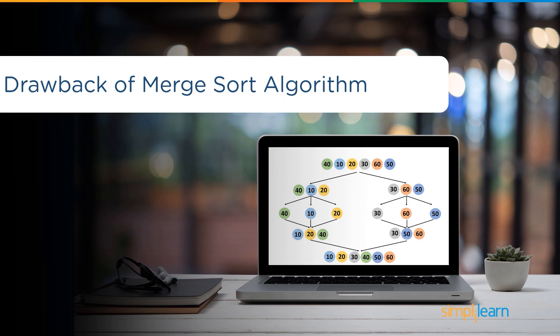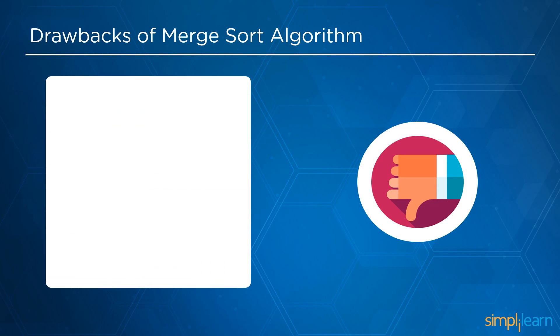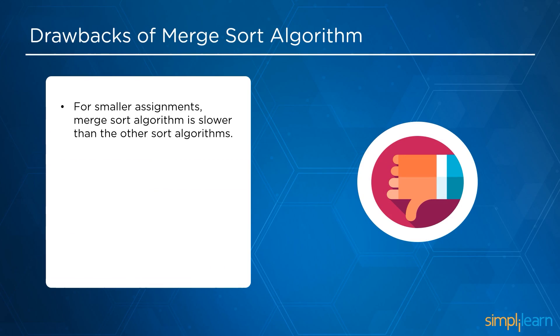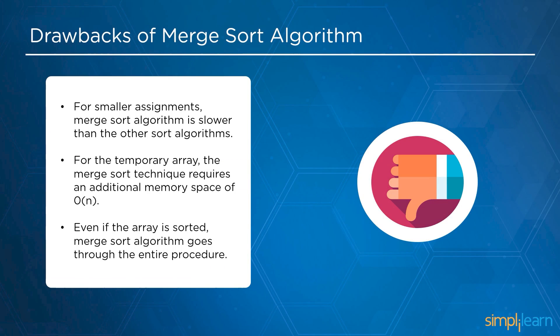Now let us look into some of the drawbacks of merge sort. For smaller assignments, the merge sort algorithm is slower than other sorting algorithms. For temporary arrays, the merge sort technique requires additional memory space of O(n). Now let us look into a practical demonstration of the merge sort algorithm.